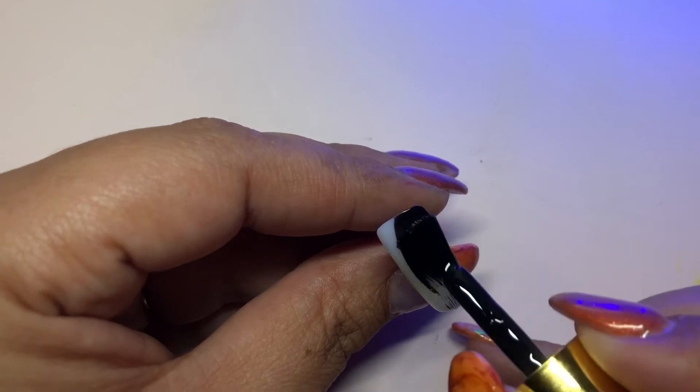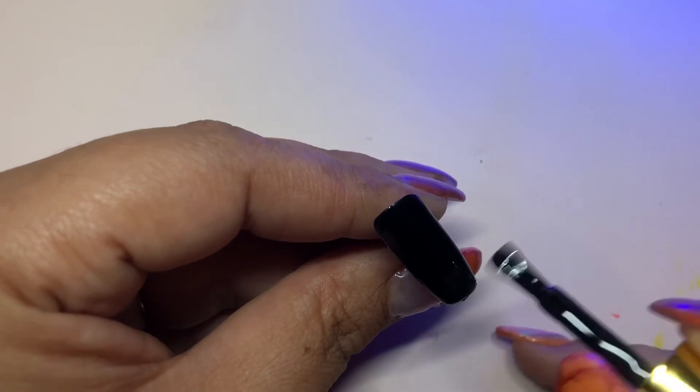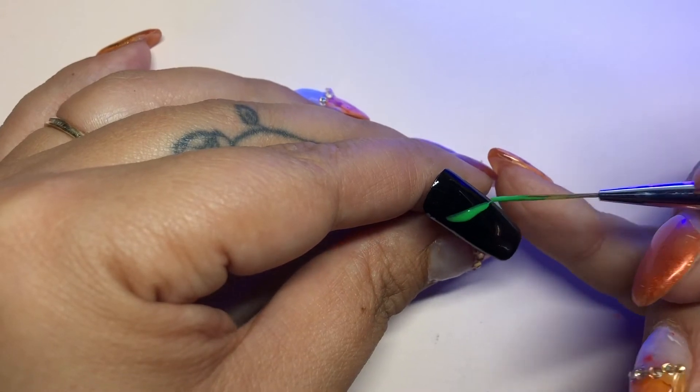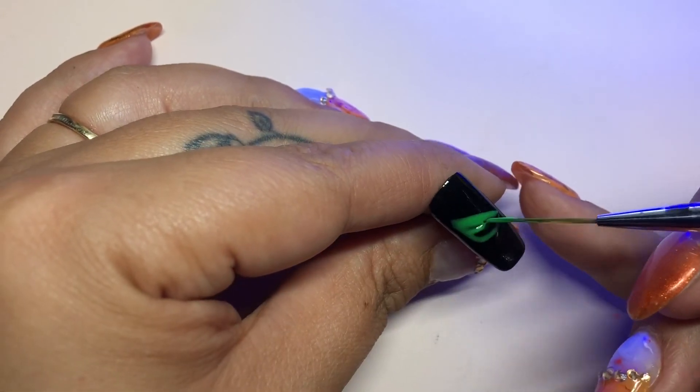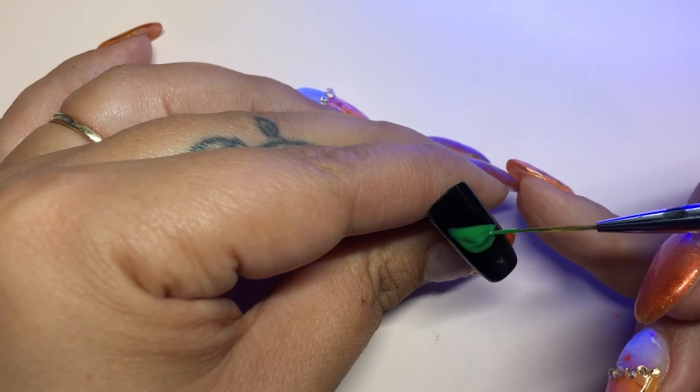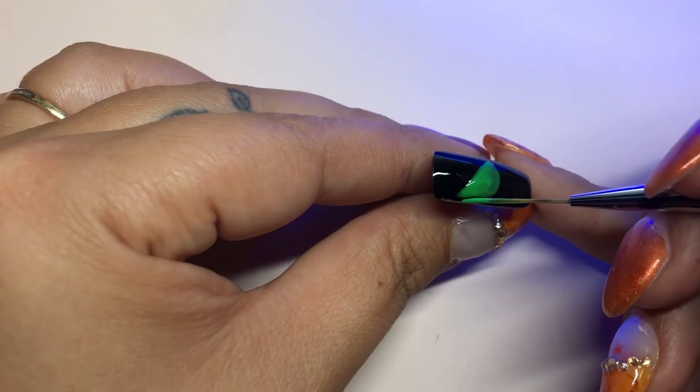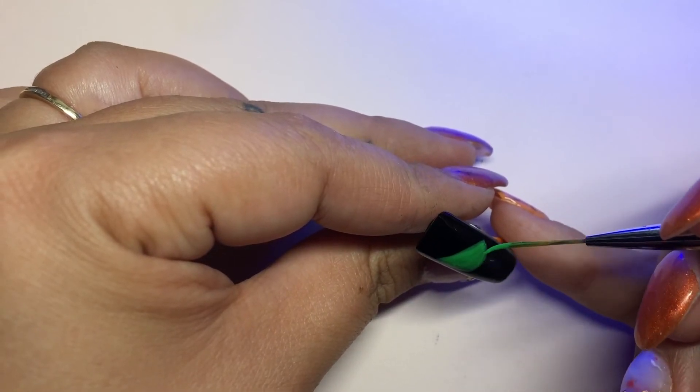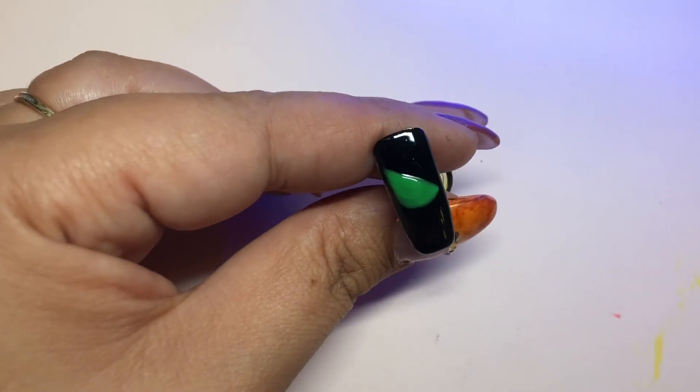Last design is my dragon eye. Apply black and cure it, then come back with green and just draw the eye. Do one coat of green, cure it, and come back and put a second coat of green to really make that eye pop. Once you have the desired eye look, cure it.